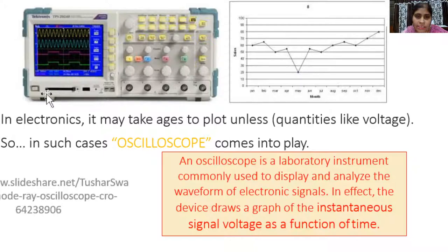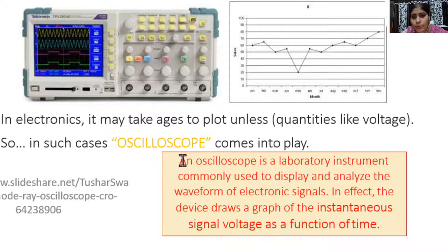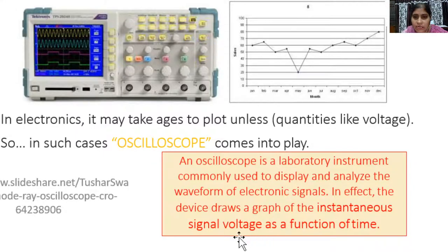As you can see here, this is the oscilloscope. This oscilloscope can be used to display waveforms. The sine waves and square waves are shown here, and other waves are also possible to display. Basically, the oscilloscope is a laboratory instrument commonly used to display and analyze the waveform of electronic signals. The device draws a graph of the instantaneous signal voltage as a function of time.